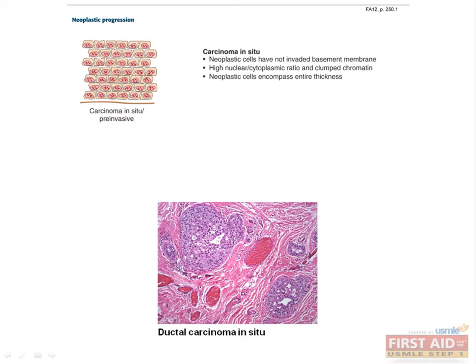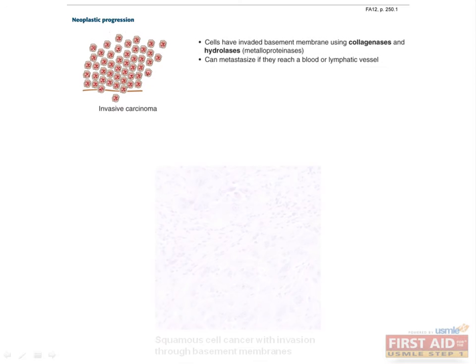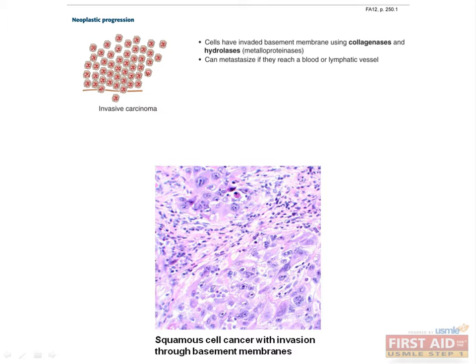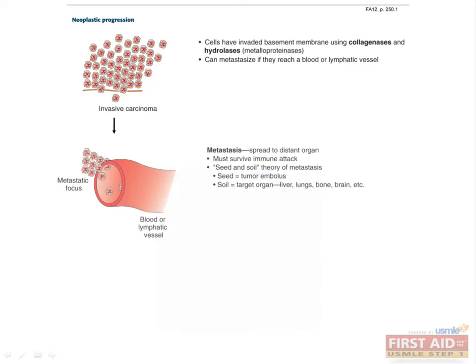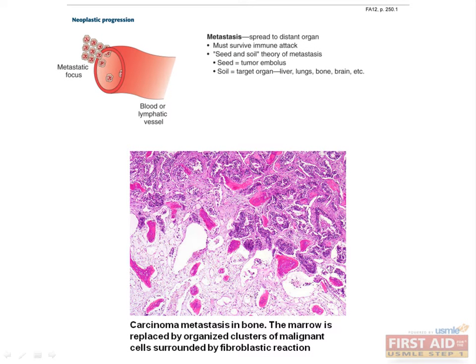As these cells continue dividing, they acquire more mutations, and eventually the whole area is filled with neoplastic cells. This state is called carcinoma in situ, which literally means cancer in one place. The picture shows ductal carcinoma in situ, a common type of breast cancer. Next, the cells can acquire a mutation that allows them to invade through the basement membrane, at which point the mass becomes a locally invasive cancer. These mutations are usually enzymes, like collagenase or hydrolase, which makes sense since the basement membrane is basically collagen held together by bonds that can be hydrolyzed. Finally, the cells can acquire a mutation that allows them to survive in a distant location, which is manifested clinically as a metastasis. One thing to remember is that carcinoma typically spreads through lymphatic vessels, while sarcoma typically spreads through blood vessels.